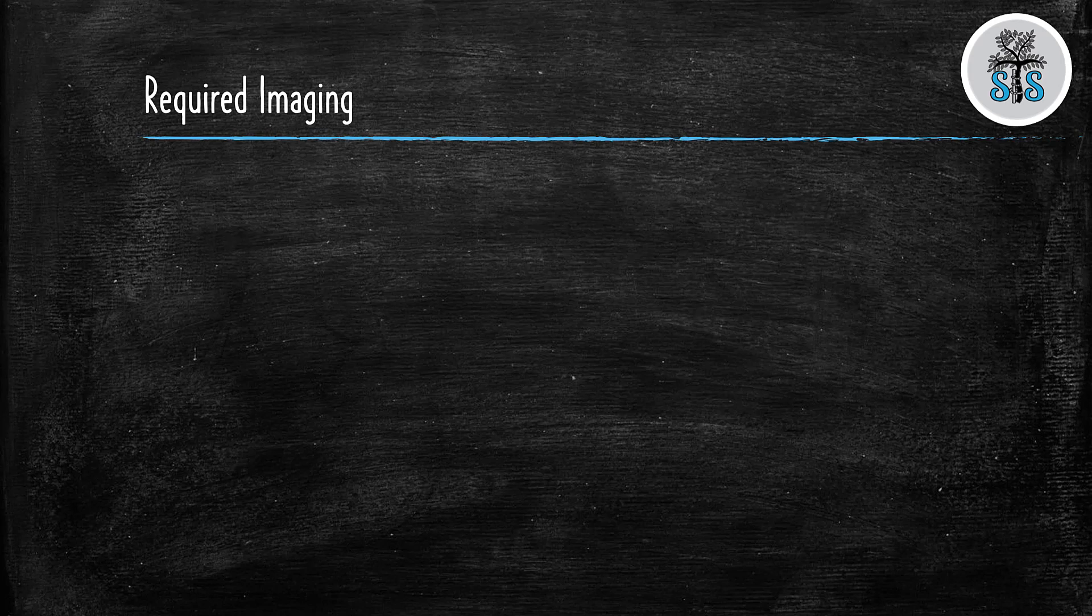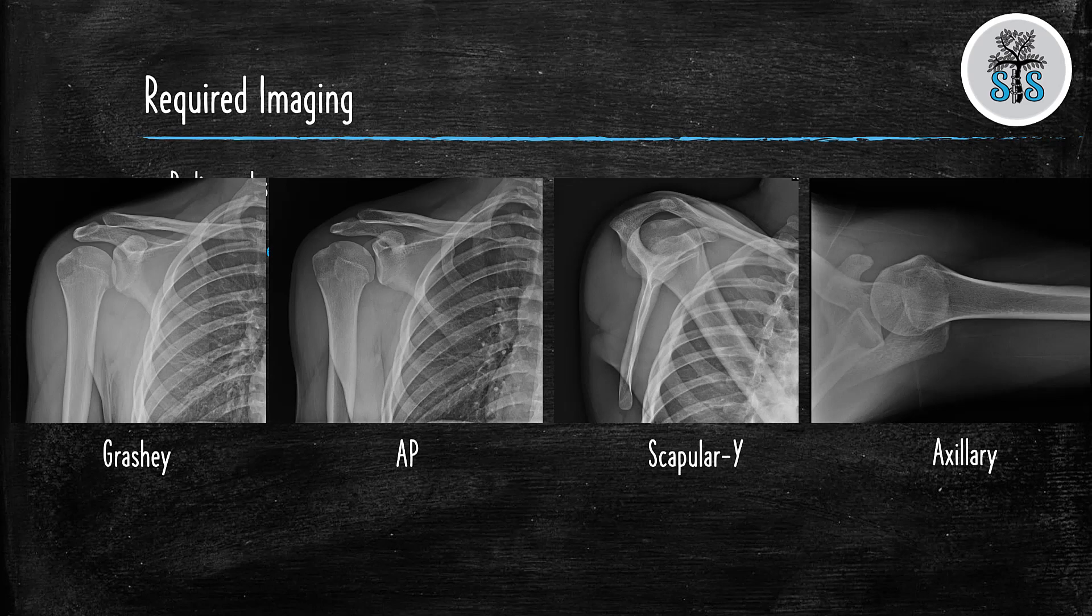So what is the minimum required imaging of these fractures? Well, you need your four standard views of the shoulder. You need your AP, Grashey, scapular Y, and axillary. Do you know what makes a Grashey view different than an AP? Well, the patient's actually going to be turned 30 to 45 degrees toward the affected side, and the arm is going to be more internally rotated. This gives the best view of the glenohumeral joint. So here, we have the Grashey, the AP, scapular Y, and axillary views.